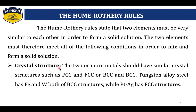Number one is crystal structure. The two or more metals should have similar crystal structures, such as FCC or BCC. For example, the tungsten alloy steel has Fe and W both of BCC structures, while the other element has an FCC crystal structure.